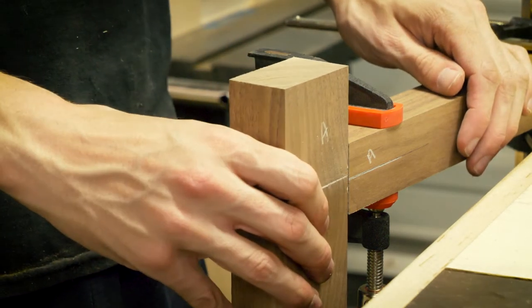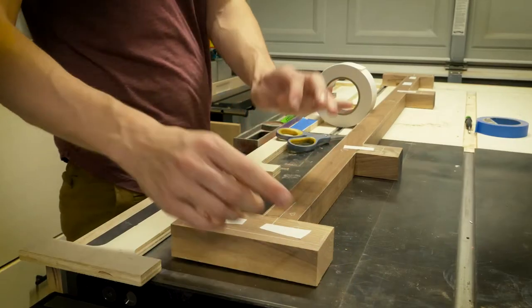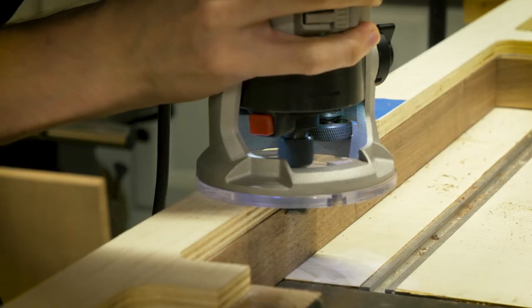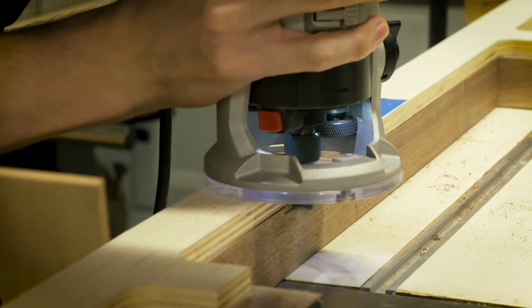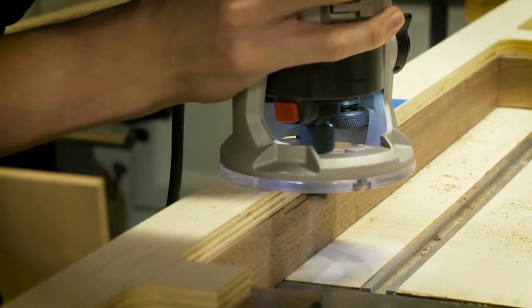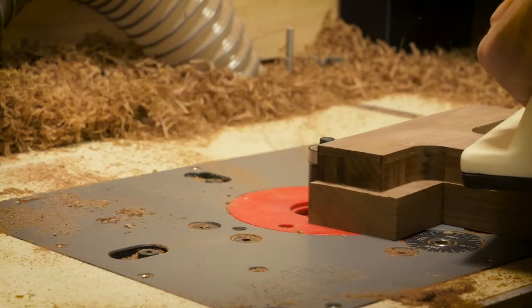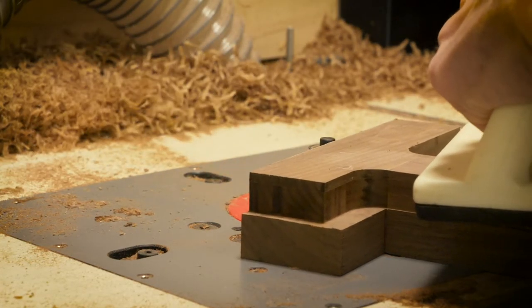I'll put a link in the description to the carpet tape I use for routing templates. It's really superior to the foam back tape that you can find and I've been loving it. I started off using my handheld router and a top bearing bit to get the basic shape and once I got about halfway through I switched over to my router table to finish off the routing.